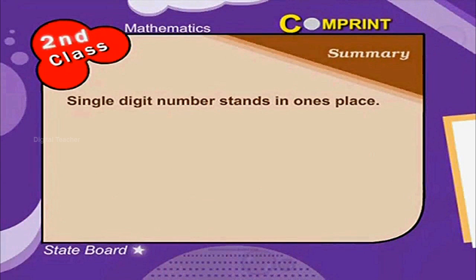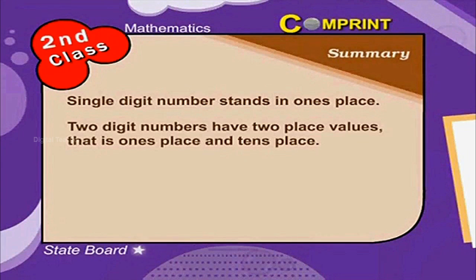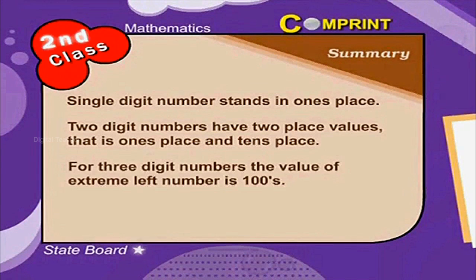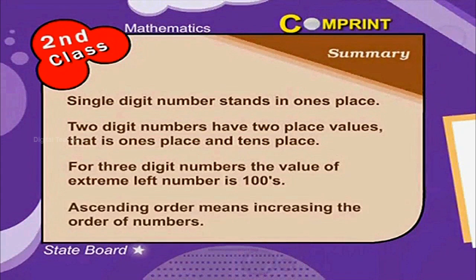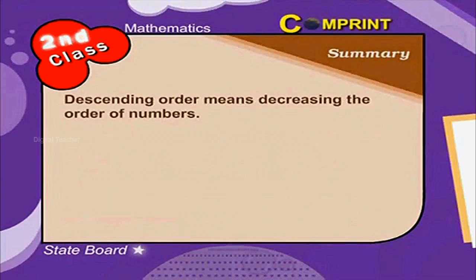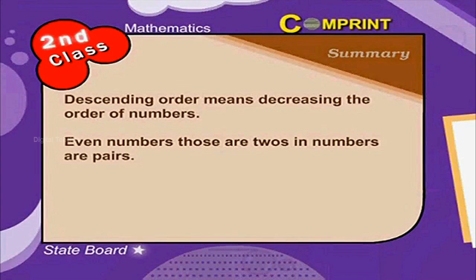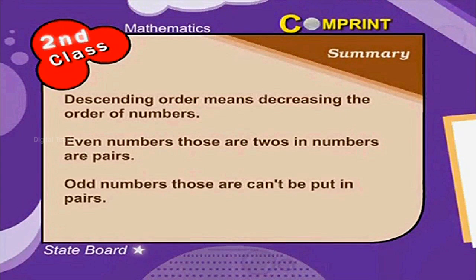Let us summarize the points. Single digit numbers stand in the 1's place. 2-digit numbers have 2 place values, i.e. 1's place and 10's place. For 3-digit numbers, the value of the extreme left digit is the 100's place. Ascending order means increasing order of numbers. Descending order means decreasing order of numbers. Even numbers are those that can be put in pairs of 2. Odd numbers are those that cannot be put in pairs, with 1 left over.